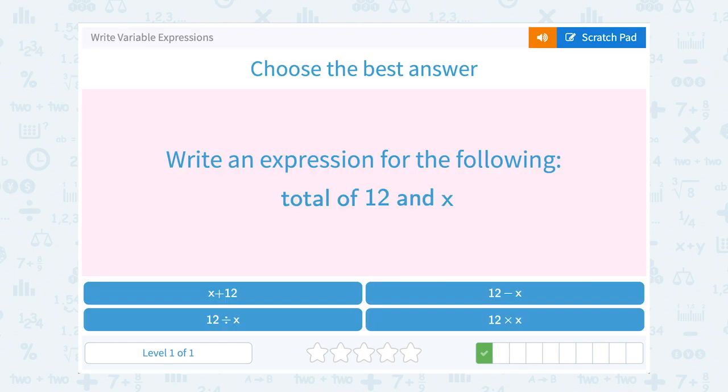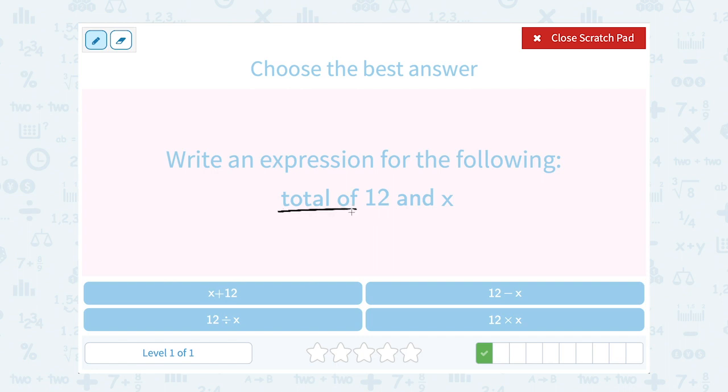Write an expression for the following, total of 12 and x. Well, keep in mind the total means all together. So if I want to know all together how much 12 and x are worth, I would need to add them, right? So 12 plus x.